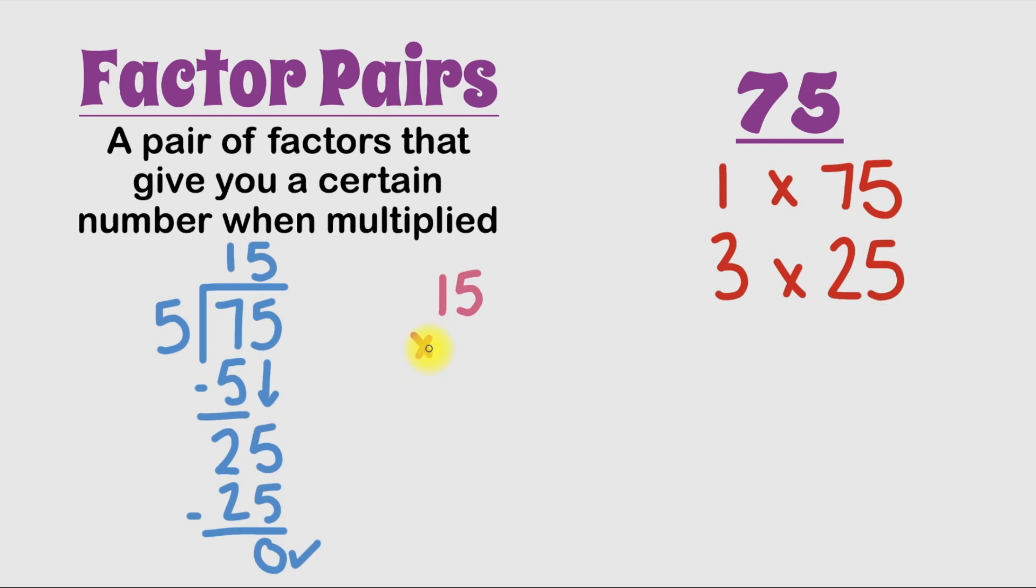15 times 5. So we've got 15 times 5. 5 times 5 is 25. Bring around the 5 and carry the 2. 5 times 1 is 5, and 5 plus 2 is 7, which gives us 75. And this means our next factor pair is 5 times 15. And let's put that with our list.